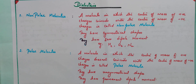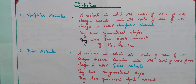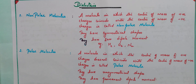Non-polar molecules means a molecule in which the center of mass of positive charges coincides with the center of mass of the negative charges. Positive and negative charges are coinciding, so such molecules are called non-polar molecules and they have symmetrical shape. Since positive and negative charges coincide, they have zero dipole moment. Examples are hydrogen, oxygen, nitrogen, etc.